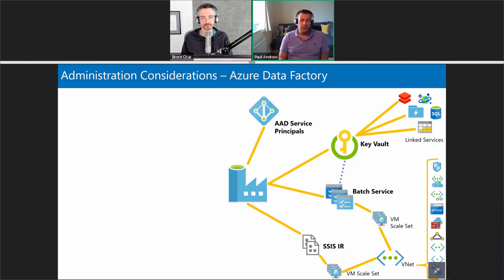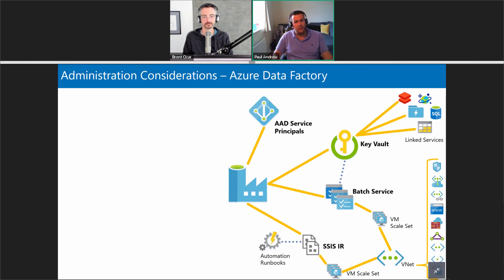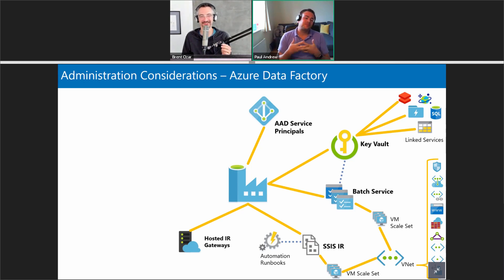If we want our SSIS package to talk to an on-premises SQL instance, that may require a VNet and Express Route — outside my comfort zone. Maybe we want to stop and start that SSIS Integration Runtime because it's expensive, so we might need Azure Automation Runbooks to handle that, with its own credentials, run-as account, and PowerShell running in the cloud.